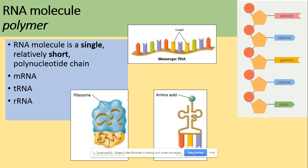Next we've got the RNA molecule which we will look at in more detail in section four. RNA is a single short polynucleotide chain. We've got three types: mRNA which is single stranded, tRNA which is single stranded but folded into a clover leaf shape, and rRNA.